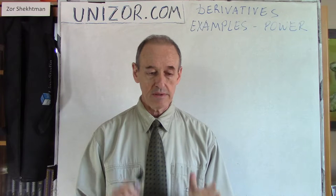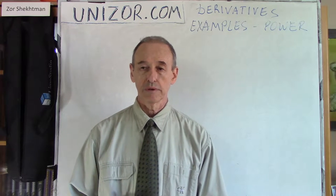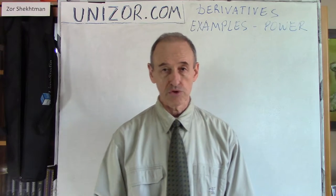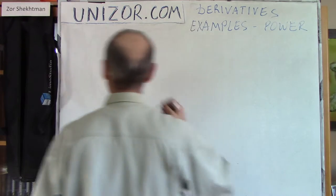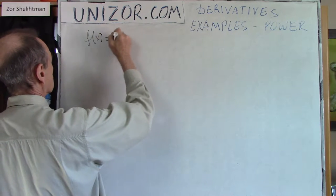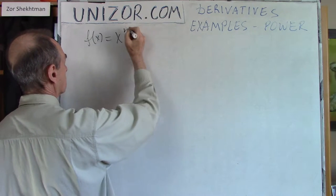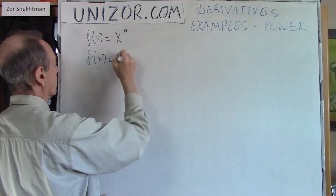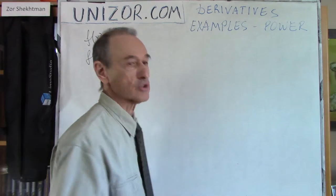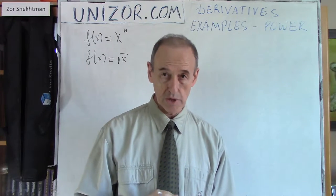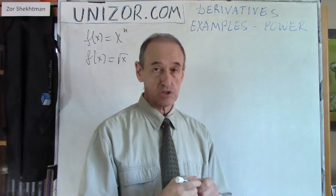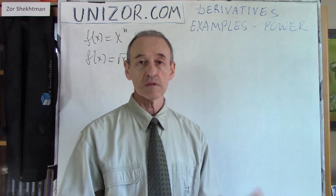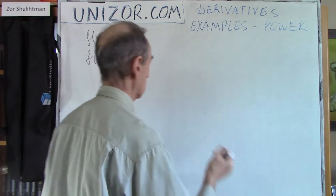So, what kind of examples will this particular lecture be devoted to? These are related to the power function. I have two examples: one function is f(x) = x to the power of n, where n is some integer number, and another is f(x) = square root of x. These two functions I would like to address today in this lecture, and I will take the derivative exactly as it is written in the definition of the derivative.